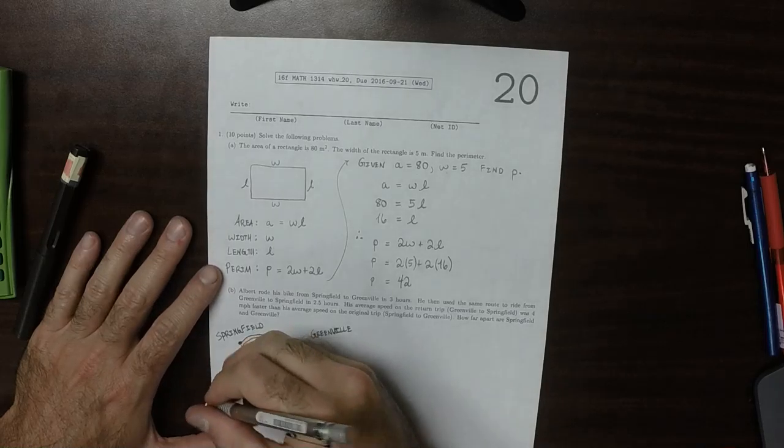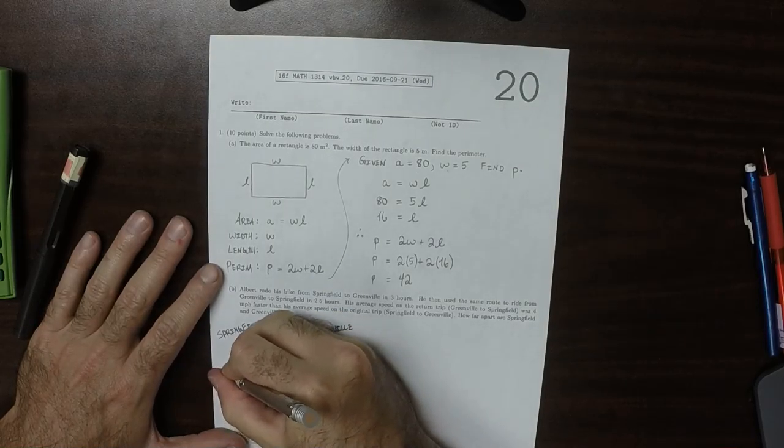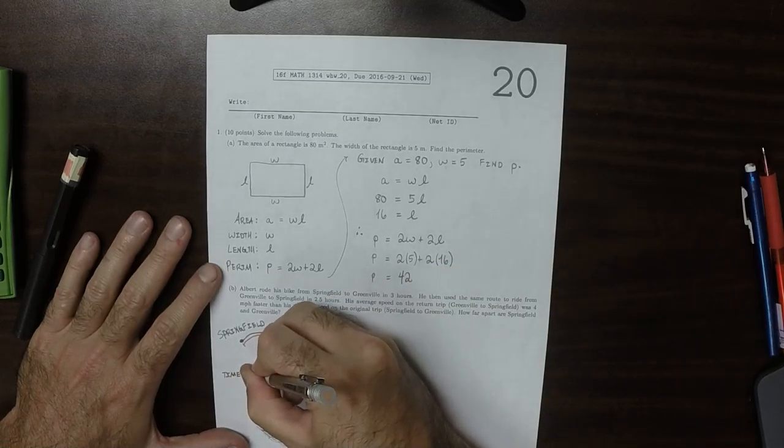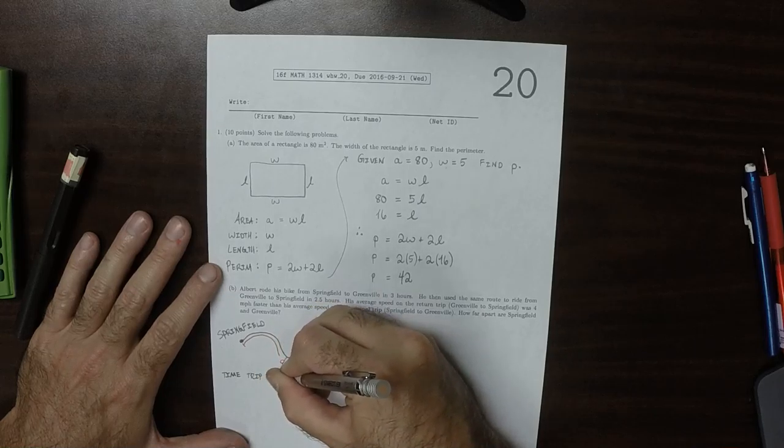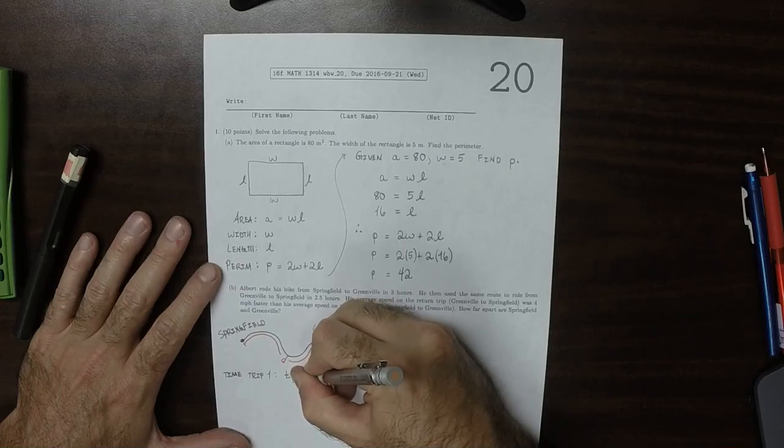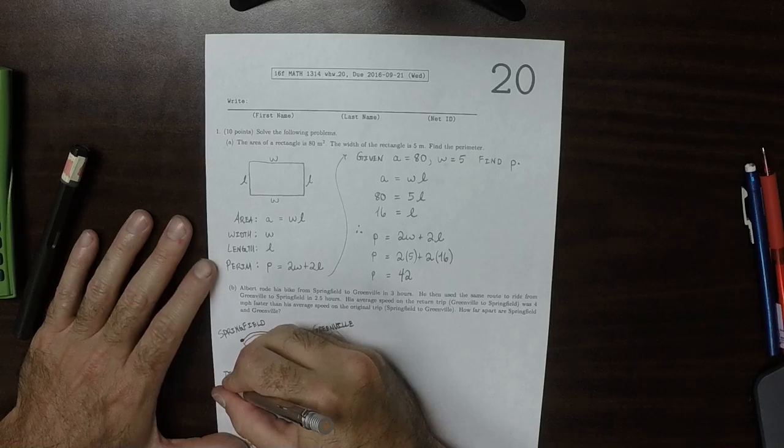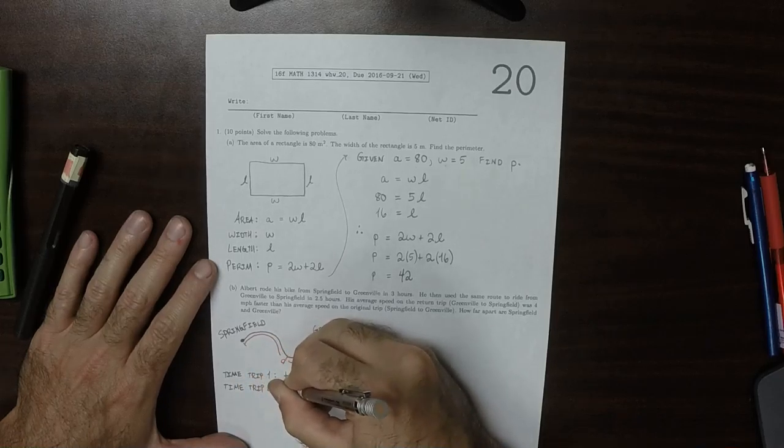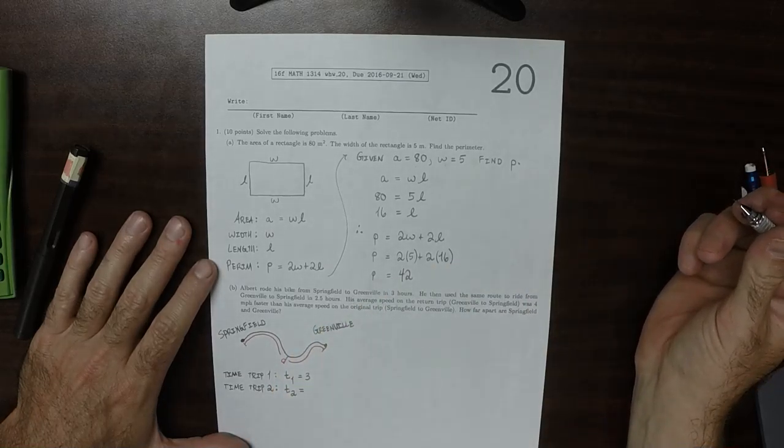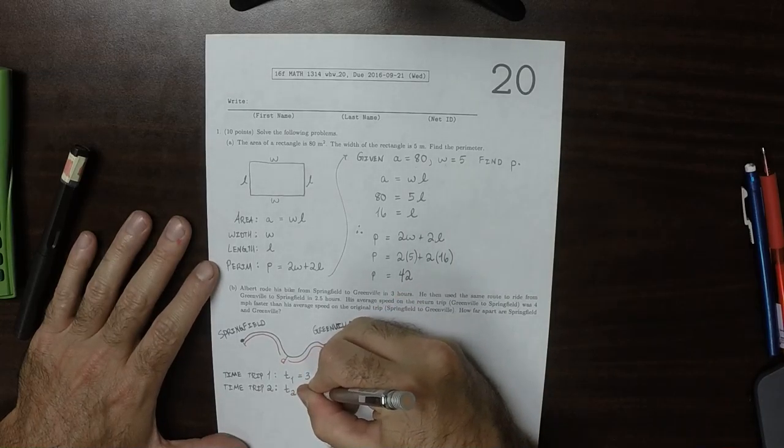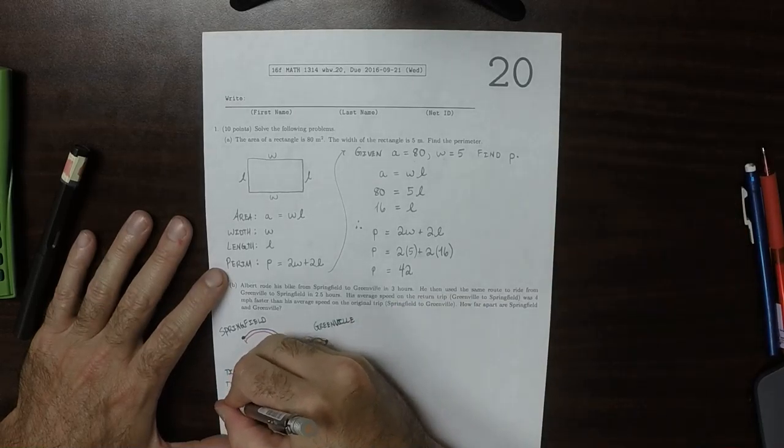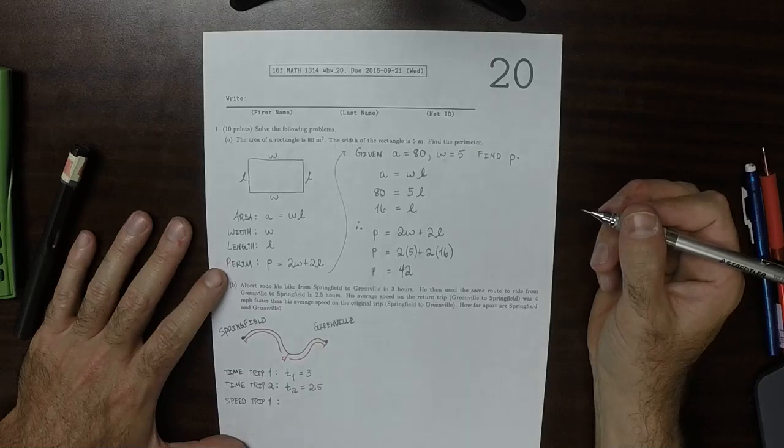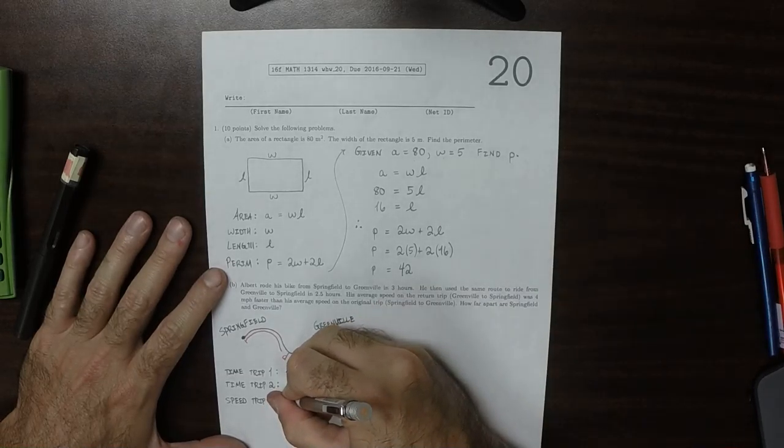Let's name everything. The time of trip 1, we'll call this T1, and that was given to us as 3 hours. The time of trip 2, we'll call that T2, and that was given to us as 2 and a half hours. The speed of trip 1 was not given to us, we'll call it S1.